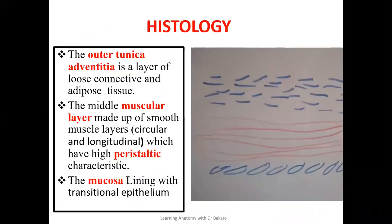The histology of the ureter. The ureter is made up of three subdivisions in terms of its microscopic configuration. We have the outer tunica adventitia layer, which is made up of loose connective tissue. We have the middle layer, which is basically muscular tissue, and this middle layer is presented in circular and longitudinal subdivisions.